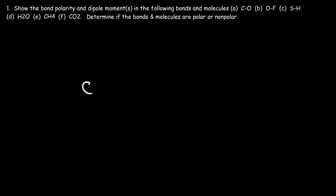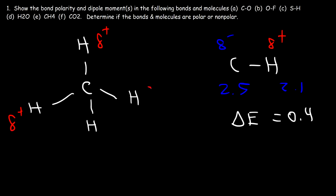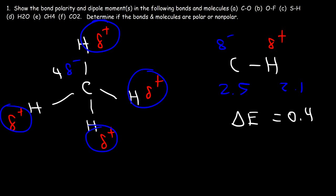Now let's consider methane, CH₄. Methane has a tetrahedral structure, which is a three-dimensional object, making it harder to represent on screen. The carbon-hydrogen bond is nonpolar — the electronegativity difference is 0.4, less than 0.5. However, carbon still bears the partial negative charge and hydrogen bears the partial positive charge. To indicate bond polarity in methane, we show the partial positive charge of every hydrogen atom, and carbon has a negative charge multiplied by four due to the four hydrogen atoms.